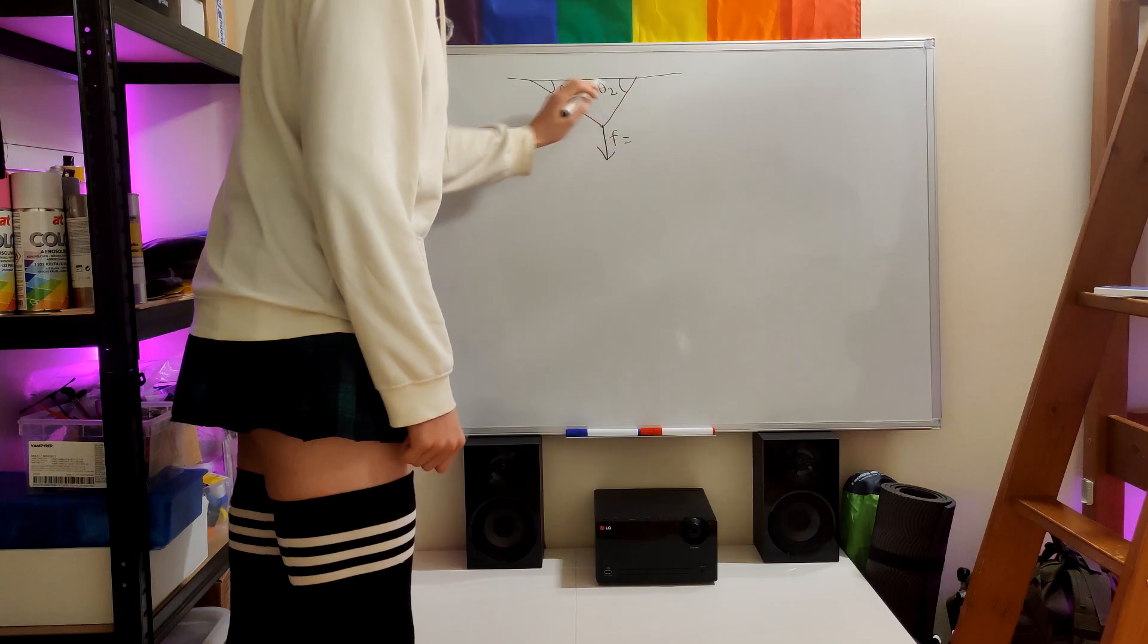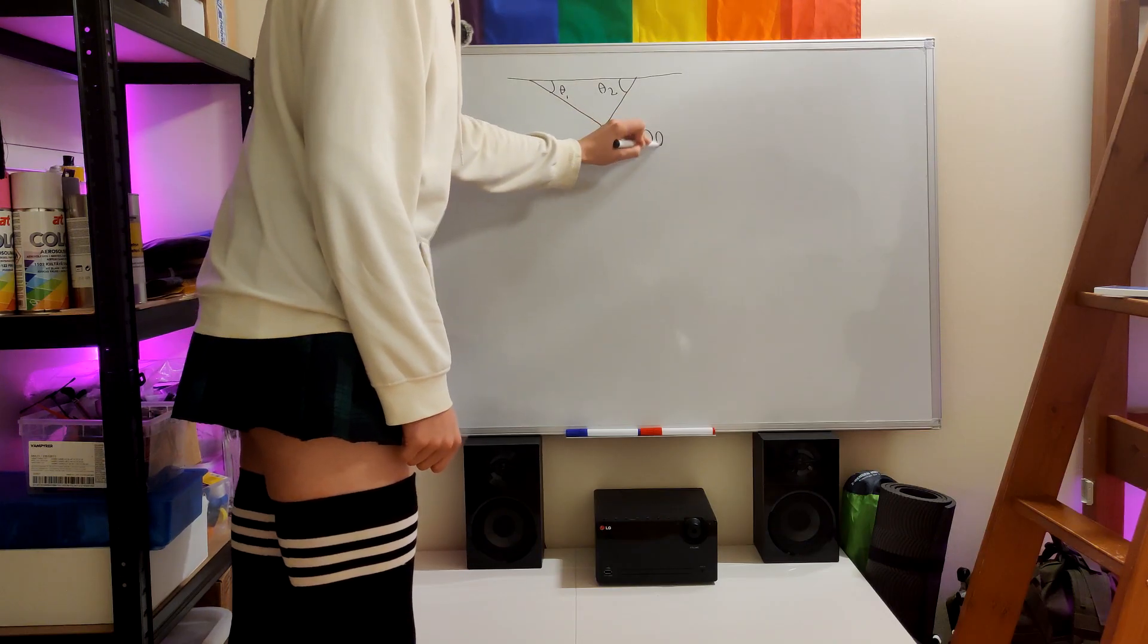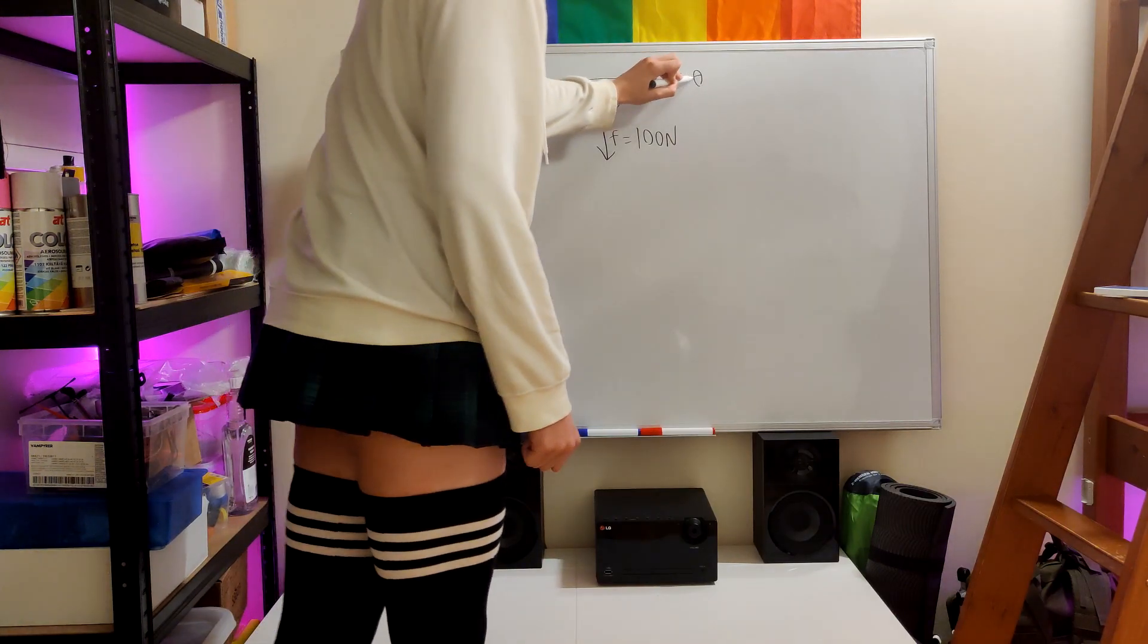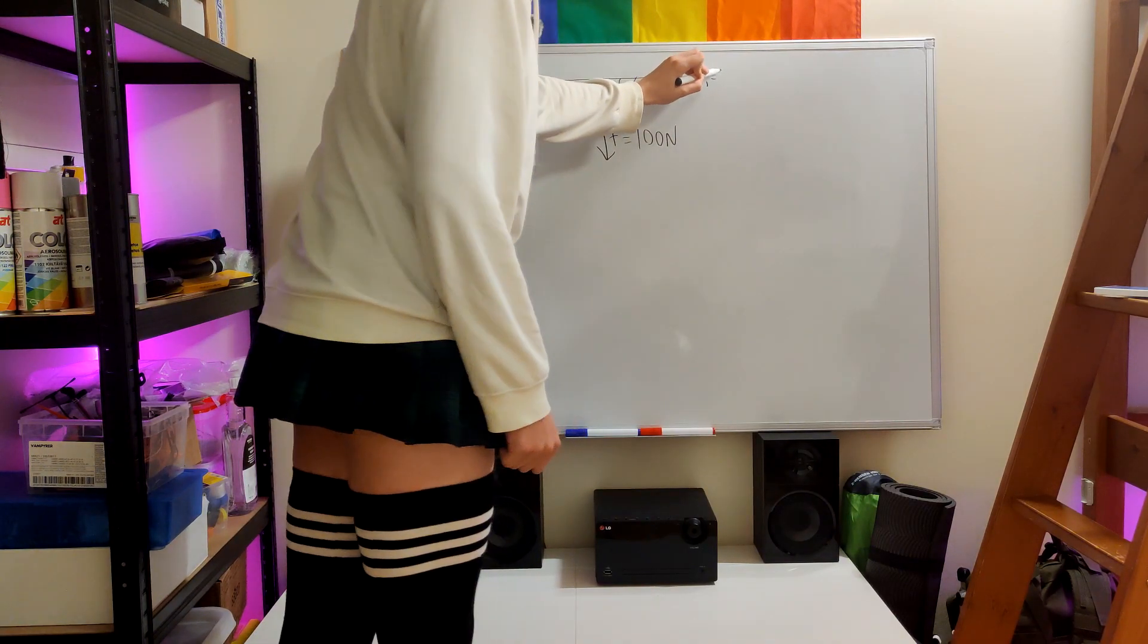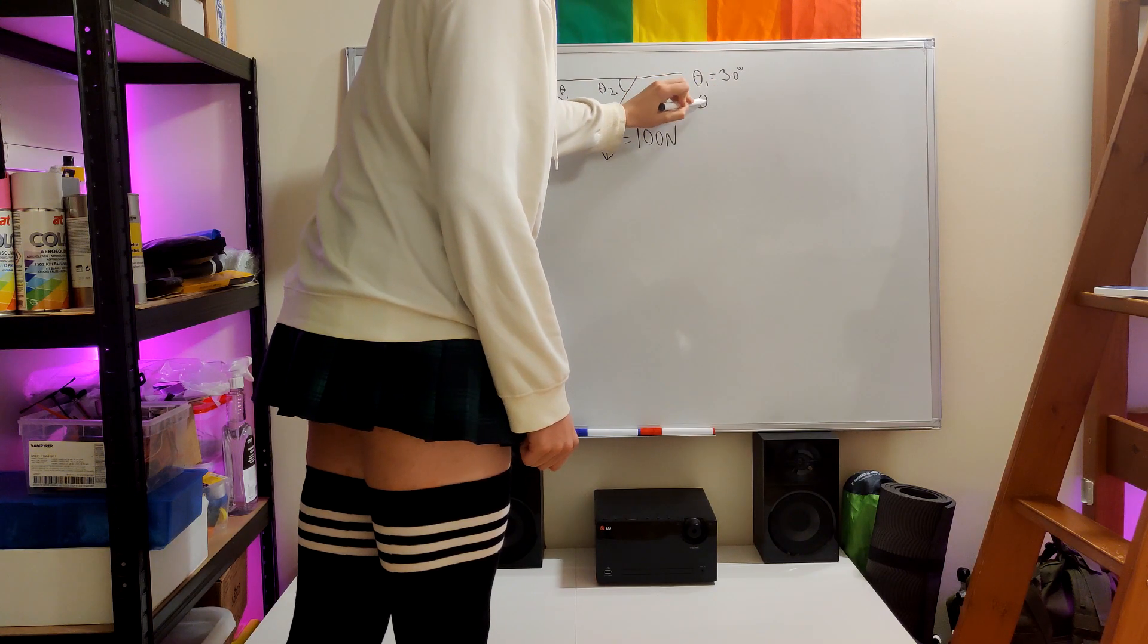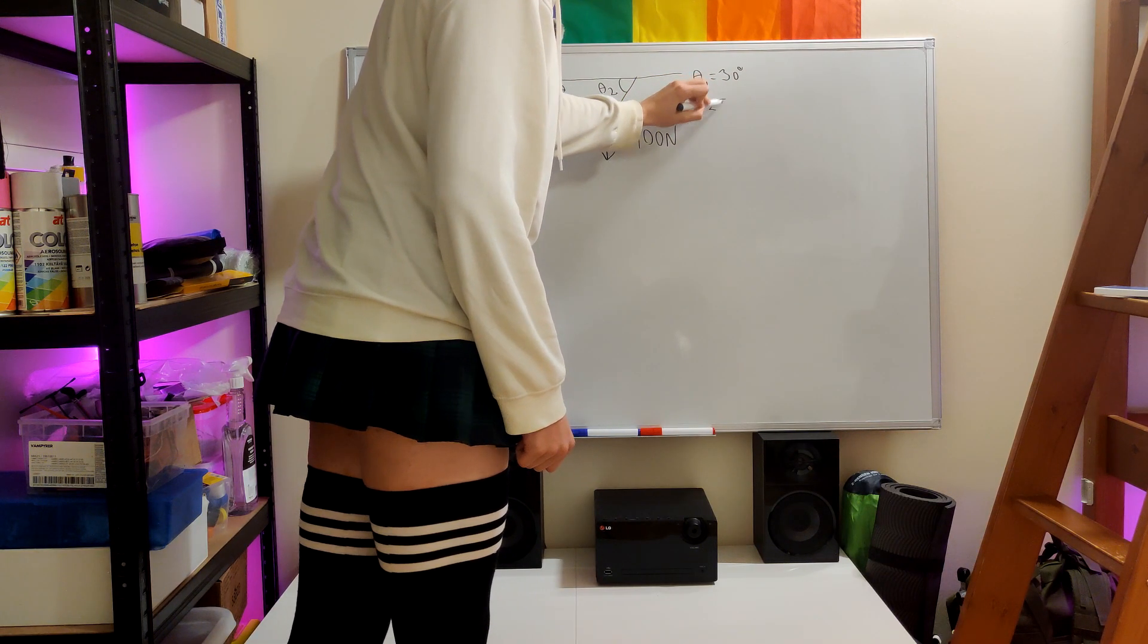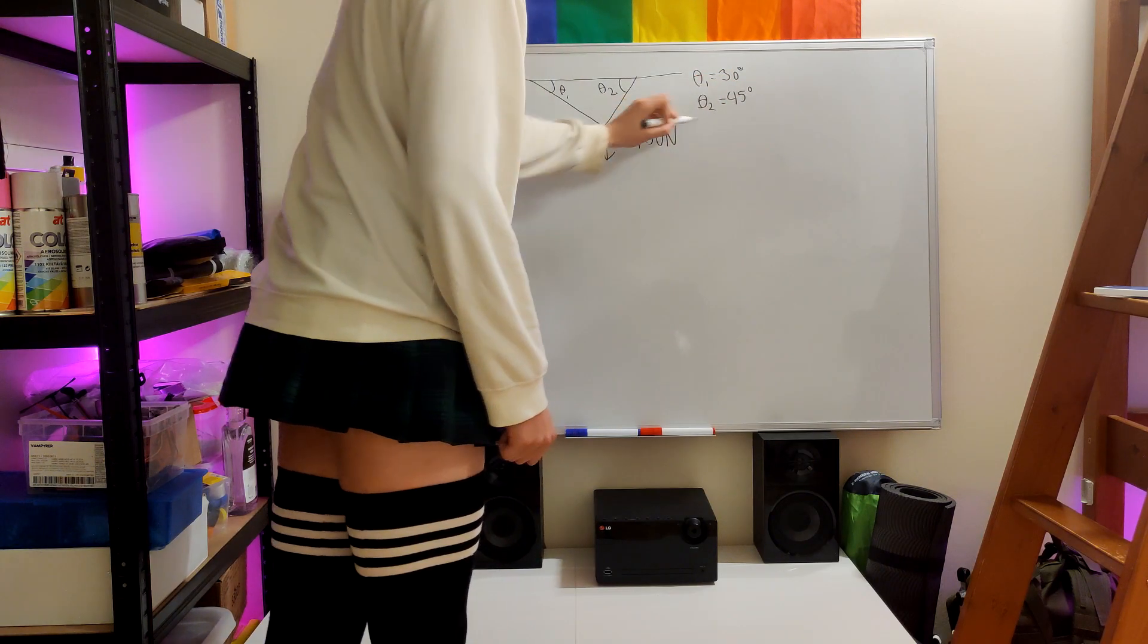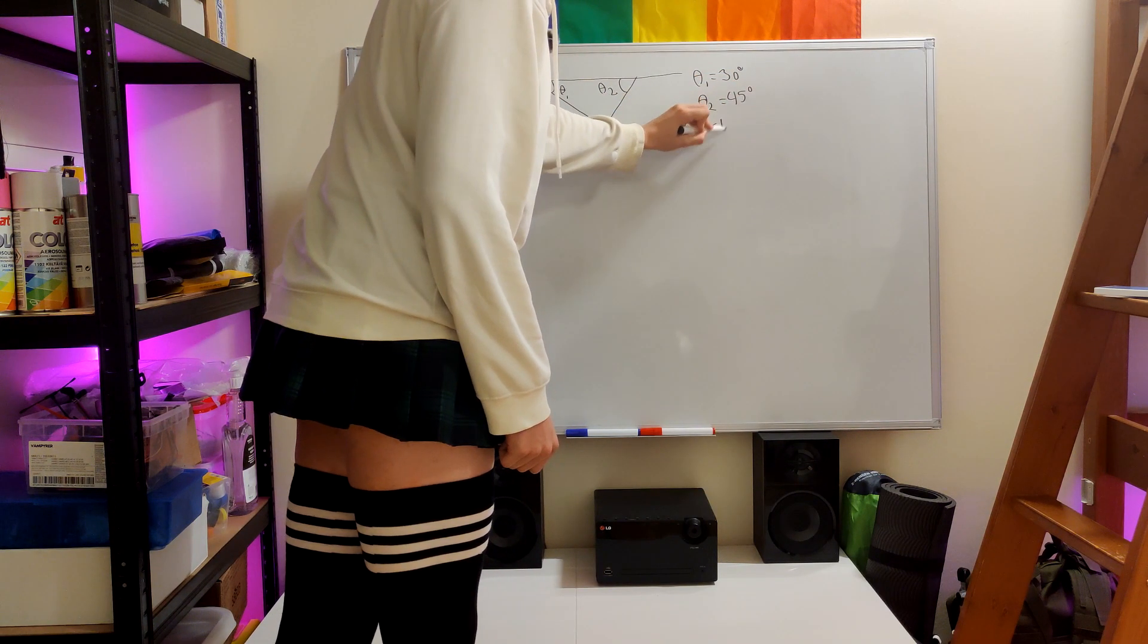Let's make it, let's say, 100 newtons. Theta 1 can be 30 degrees and theta 2 can be 45 degrees. And of course F is 100 newtons.